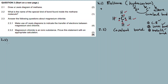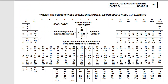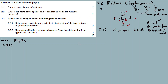Question 2.3 / 3.1: Answer the following questions about magnesium chloride. The formula for magnesium chloride is MgCl₂. Magnesium is in group 2, meaning it loses two electrons. Chlorine is in group 17, meaning it gains only one electron. So the formula is MgCl₂.